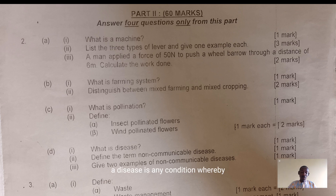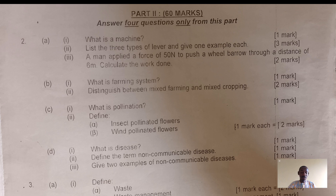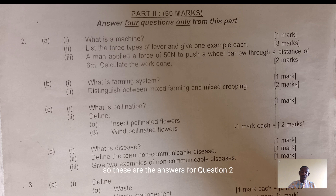D(i): a disease is any condition whereby the body does not function properly. D(ii): a non-communicable disease is a disease that does not spread from one person to another. Examples of non-communicable diseases include heart attacks, stroke, and cancer. Those are the answers for question two.